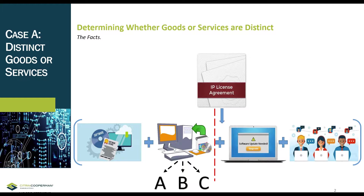In some cases, there will be contracts that contain multiple promises. We are going to walk through identifying whether goods and services are distinct or not, and thus determine whether goods and services qualify as separate performance obligations. Let's take a look at the facts in Case A. Best Software Inc. enters into a contract with a customer in which they transfer a software license, perform some installation work, and provide various software updates and technical support for a two-year period.